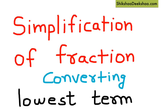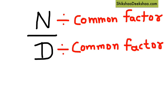Simplification of fraction. To simplify a fraction means converting a fraction to its lowest term. We can do it by dividing numerator and denominator by their common factor, by the same number which is their common factor. Let's understand how.